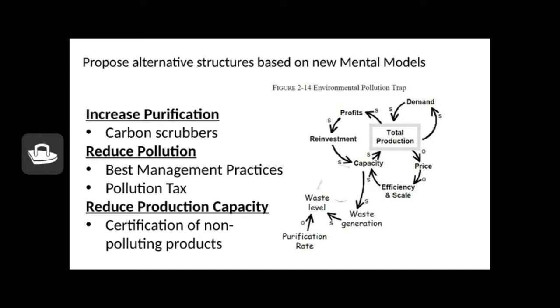Reduce pollution, you can cut pollution directly with best management practices, IPM and improved production practices, sustainable practices. We could tax pollution, that would certainly put a damper on pollution. We could reduce the production capacity, actually reduce the amount of products being produced. Let's take a look at how this might work.